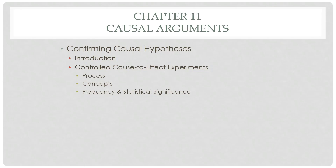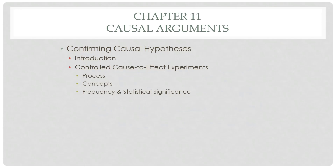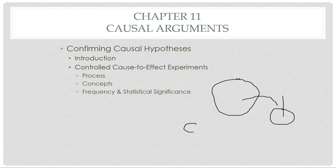It's controlled, so what you end up doing is you have the question you're looking at — you're wondering what does this cause do — and you have your population that you want to know about and a causal agent. To conduct the controlled cause-to-effect experiment, it's very similar to doing inductive generalization. You pull out a sample that ideally represents your target population, and then you split it into two groups.